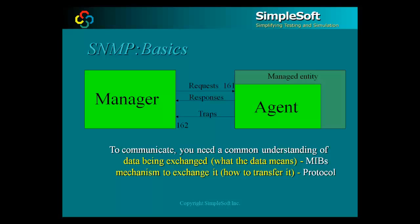In order for two entities to communicate with one another, they need to share a common understanding of the data being exchanged and use the same mechanism to exchange that data. In the world of SNMP, the common understanding of data being exchanged is defined in the SNMP MIBs, and the common mechanism to exchange the data is defined in the SNMP protocol.